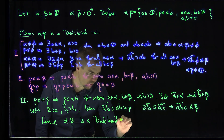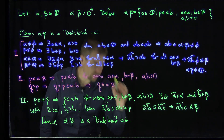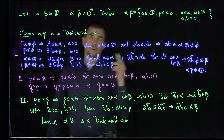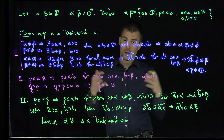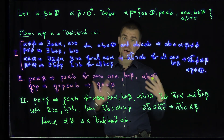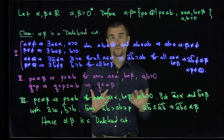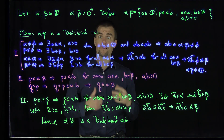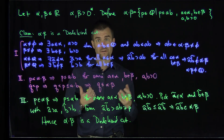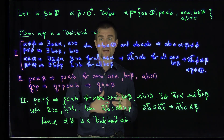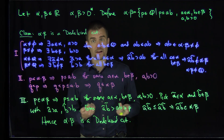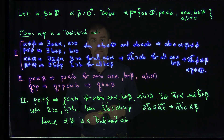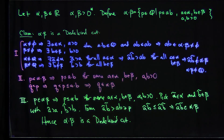We've shown that this multiplication operation is a closed operation — that's the first field axiom. The next video will show the field axioms of commutativity, associativity, and the existence of an identity. Thank you very much.